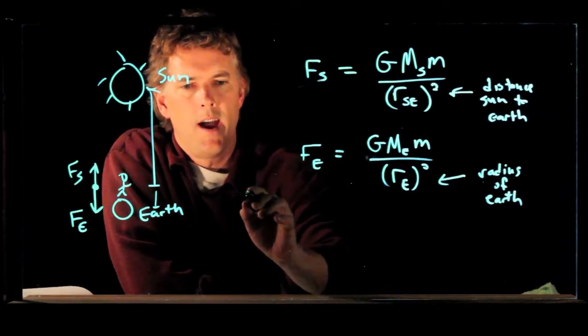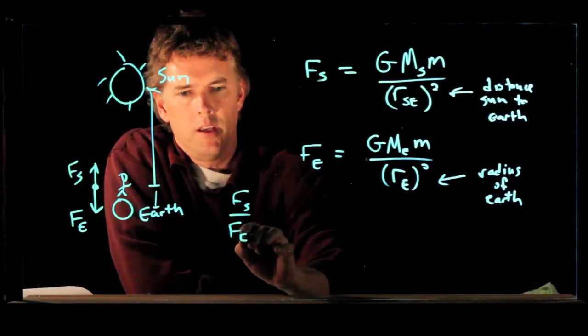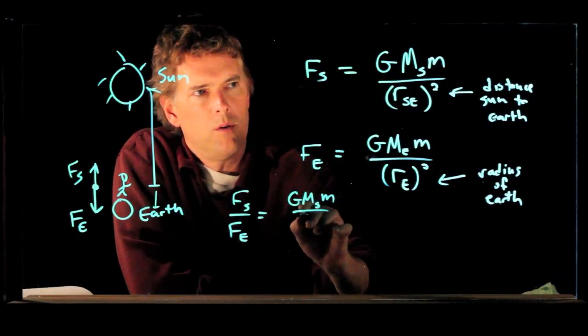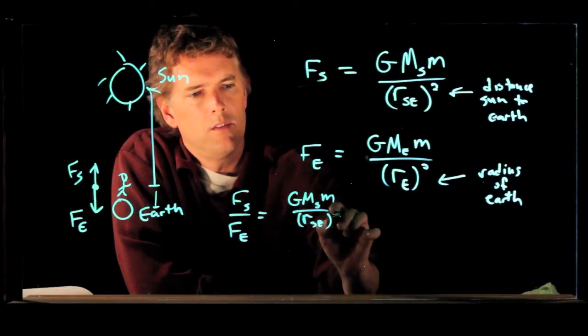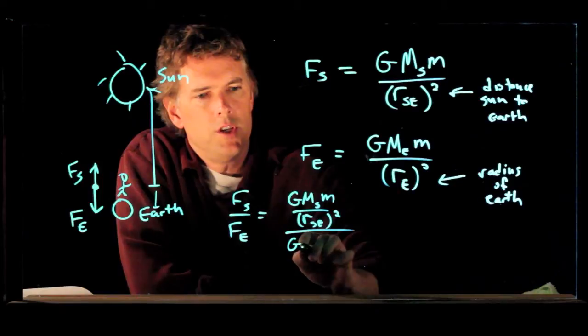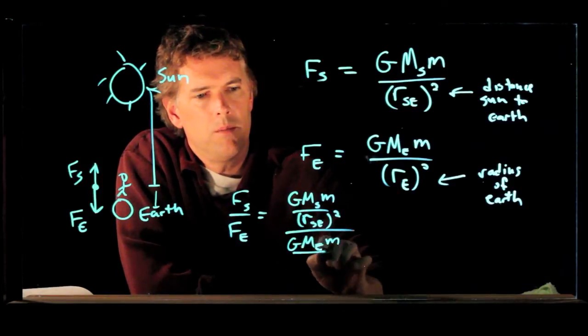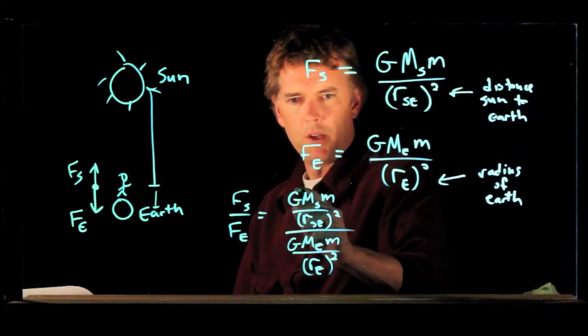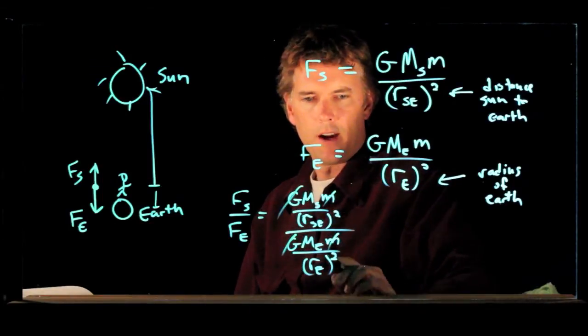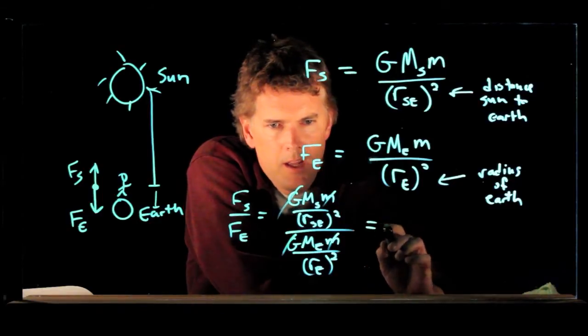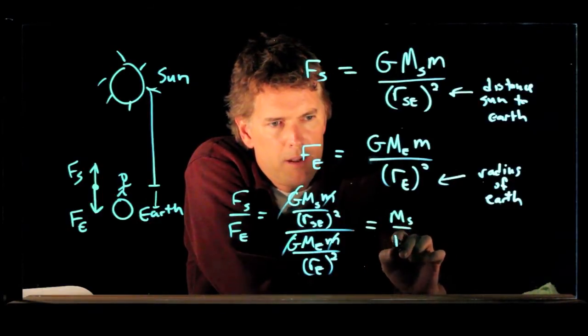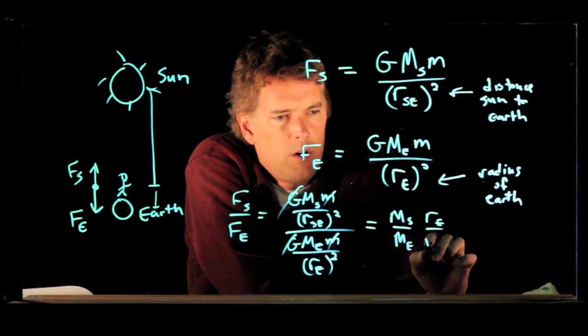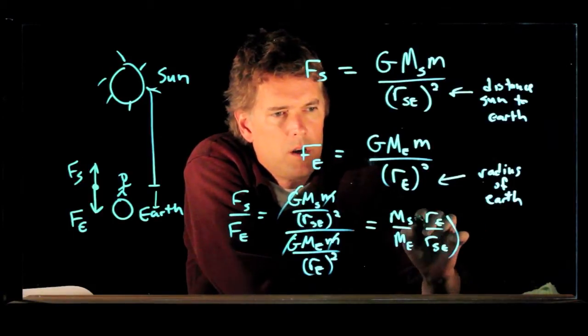Okay, and so now we can do the ratio. F_s over F_e equals GM_s m over r_se squared, all over G mass of the earth, little m, over r_e squared. And so a few things cancel out here. The big G cancels out. The little m cancels out. And we can rewrite this as the following: mass of the sun over mass of the earth times r_e over r_se quantity squared.